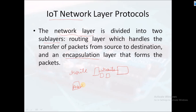The encapsulation layer binds data into packets. So the network layer has two sub-layers: the routing layer and the encapsulation layer. The encapsulation layer forms and binds data into packets, while the routing layer handles the transfer of packets from source to destination.